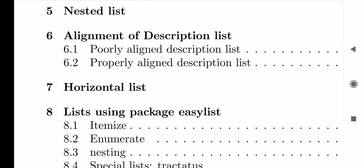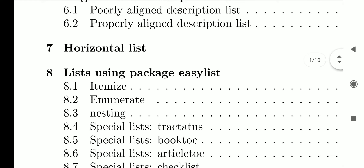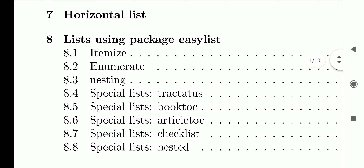Horizontal lists are also covered — you may have seen multiple choice question papers where four or five options are listed horizontally, with two or more items on one line. Finally, there is the easy list package, which can produce all the above-mentioned list types including nesting using very simple syntax compared to basic lists.